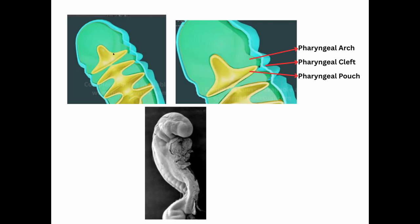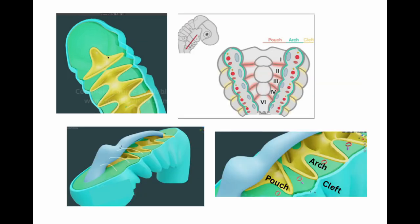The electron microscopy picture shows very clearly the frontonasal process along with the pharyngeal arches. The cut section clearly shows the pharyngeal endoderm extending outward as the pharyngeal pouches. So the external pharyngeal cleft, then the pharyngeal arch — which is mesoderm — and then inside there is the endodermal pharyngeal pouch.